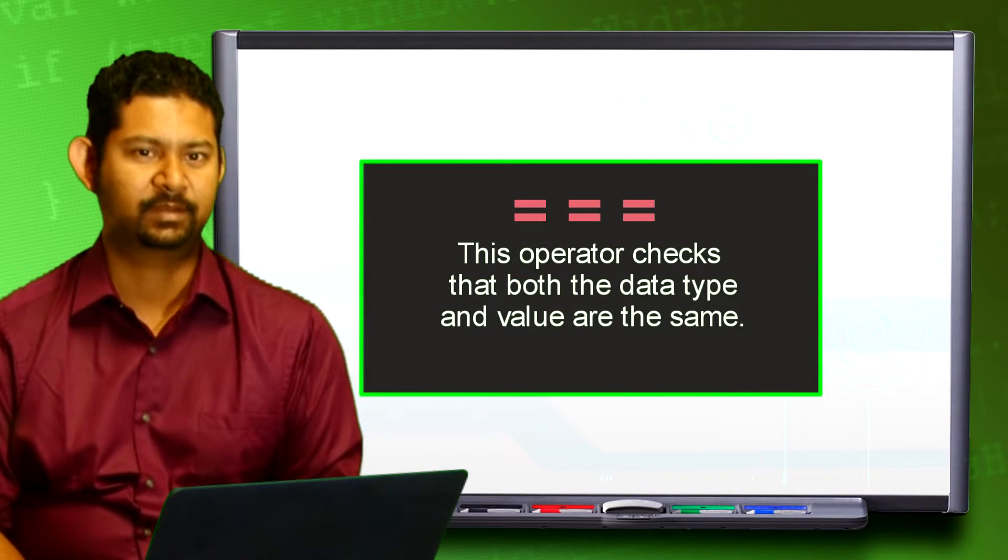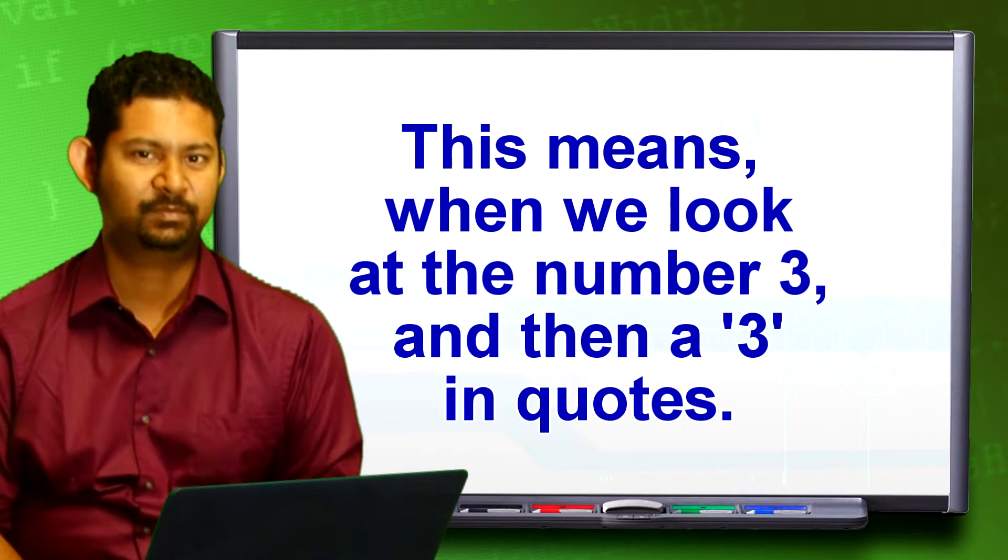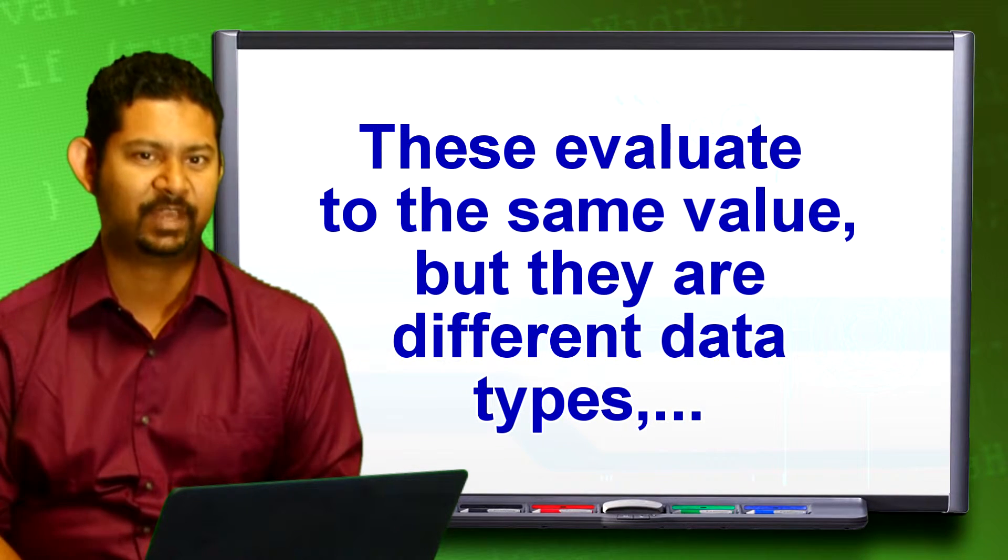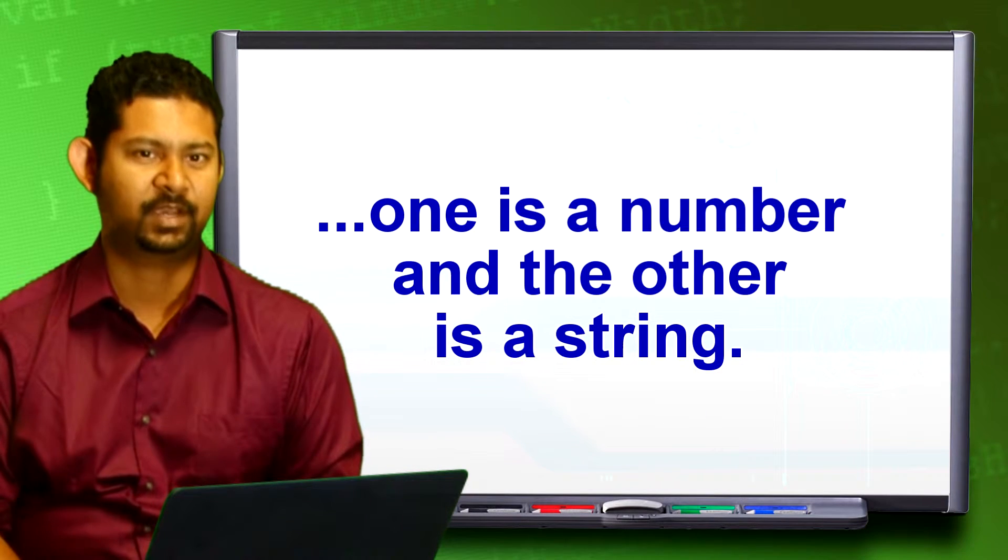Triple equal sign. This operator checks that both the data type and value are the same. This means when we look at the number 3 and then a number 3 in quotes, these evaluate to the same value but they are different data types. One is a number and the other is a string.